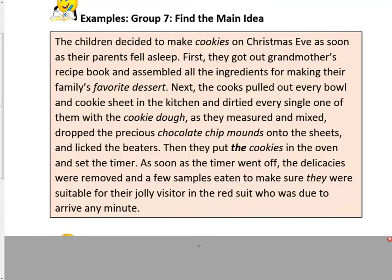Let's take a peek at this. First of all, we're going to look for the topic — and if you said cookies, just like before, you'd be right. We keep mentioning them: cookies, cookie dough, chocolate chip mounds, delicacies. Now let's look for any special listing phrases — can you find any? No. How about a special contrast word like 'however,' 'but,' 'in spite of,' or 'in contrast'? Can't find any of those either. So what do we do now? We look for a sentence that states something general — an overarching big-picture idea. If something is general, then the other sentences will be more specific.